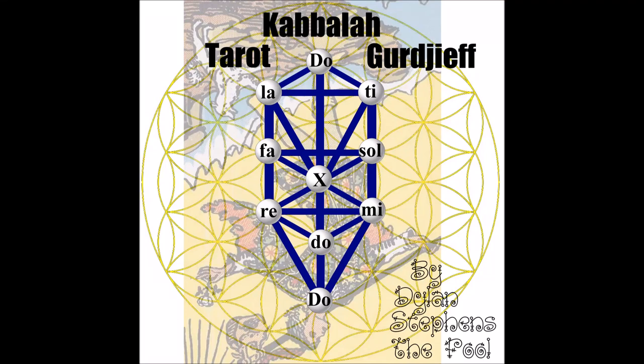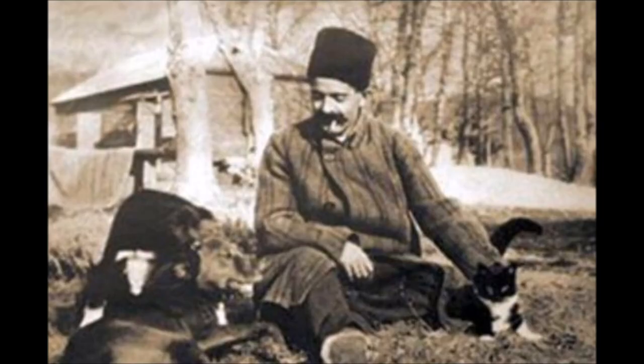This next lecture, lecture four, is titled 'Placing the Major Arcana of the Tarot Cards on the Kabbalah, Correcting the Upside-Down Order, and Also Finding the Engine of the Sephirah that Bridges the Discontinuities of the Gurdjieff Enneagram.'